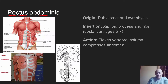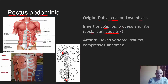The origin of this muscle is going to be the pubic crest and symphysis, and the insertion would be the xiphoid process and the ribs, specifically the costal cartilages five through seven. Here's our origin in the pubic region, and the insertion is the costal cartilages. We're only looking at the right side of the rectus abdominis, which is easy to recognize on lab models.